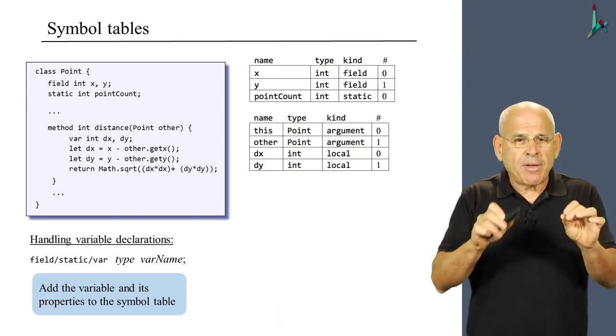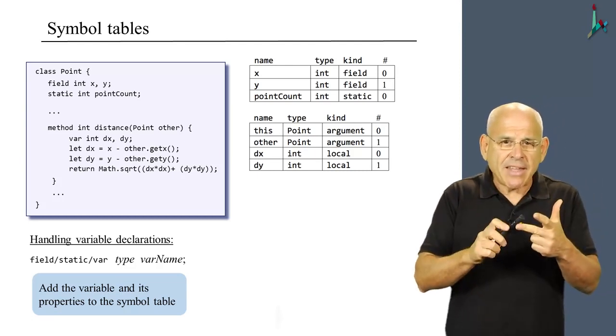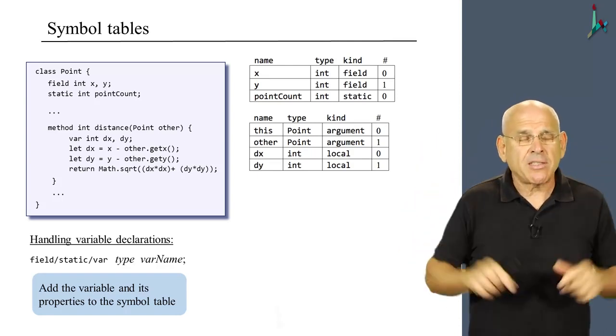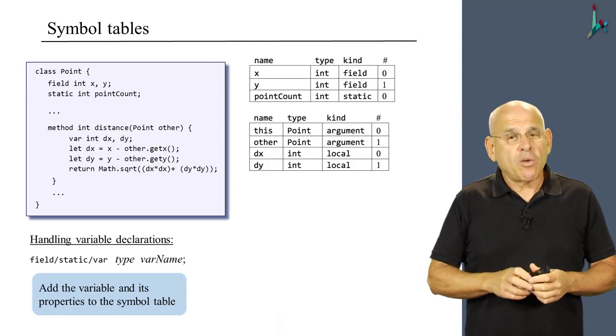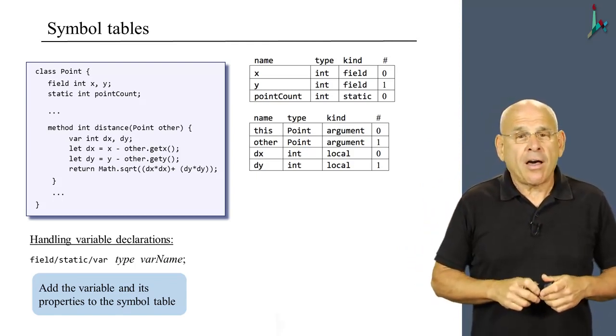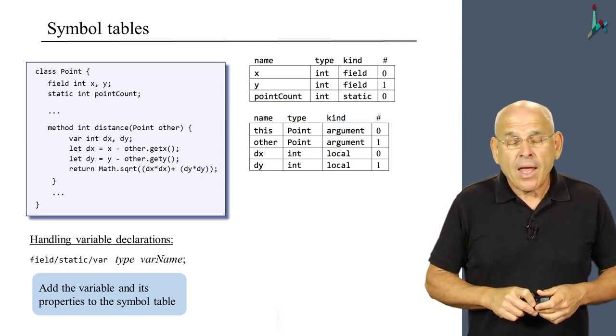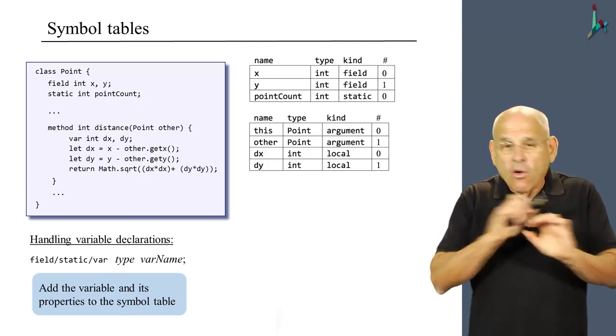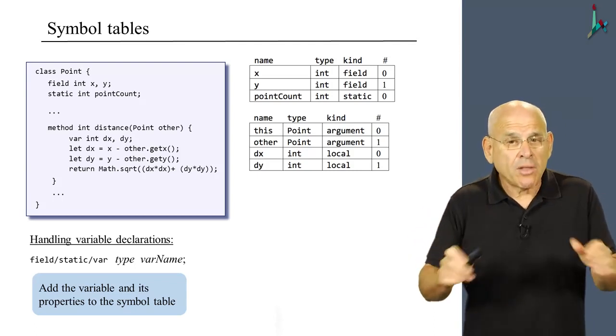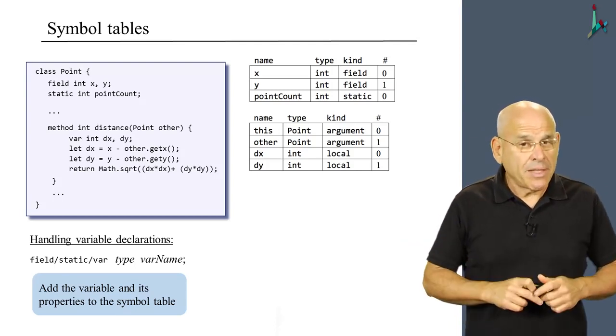If we are defining a field or a static variable, the code writer will add a new row to the end of the class level symbol table. If we are defining a local variable or an argument, the code writer will update the symbol table of the subroutine, which is currently being compiled. And by the way, one thing which is missing here is the treatment of arguments. We talked only about locals, fields, and statics. Well, arguments are being defined as part of the parameter list of the method signature. So when the code writer goes through this parameter list, it also adds the respective lines to the subroutine's symbol table. Now, importantly, that's the only thing that the code writer does. It generates no code whatsoever beyond updating the symbol tables.